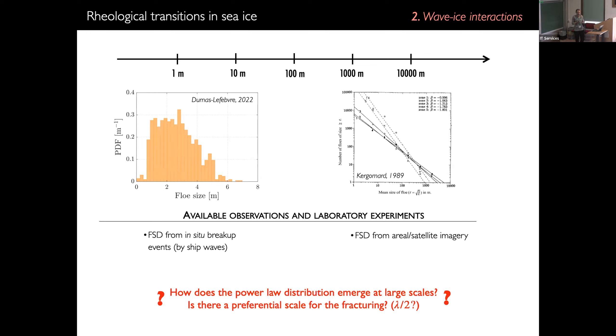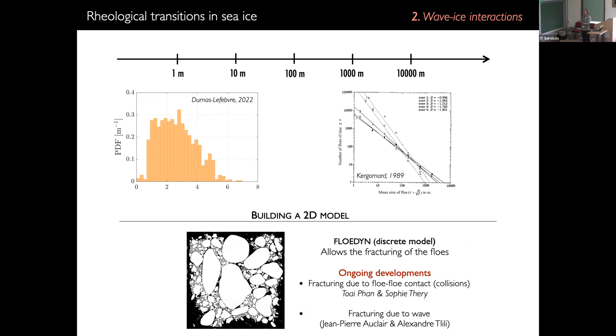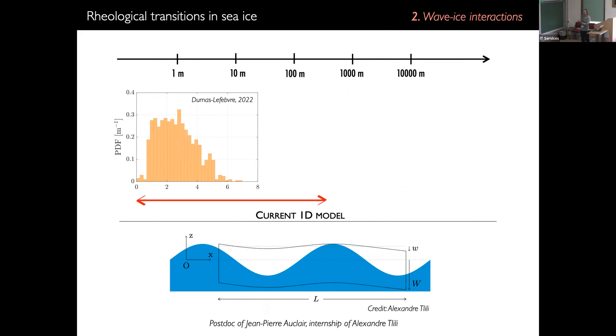Is it because we have many fracturing events that occur? Is it because there is fracturing and then collision and then grinding of the floes? We would want to know that. Also, we would want to know if there's really a preferential scale for the fracturing. Is it the wavelength of the wave divided by two? Is it something else? And so to do that, we would need a large number of wave ice and floe interaction observations, but we don't have that. So we're going to try to fill in the gap again using a model. So the model will be eventually the Flodin 2D model. The developments to allow that are ongoing. So we're including fracturing due to floe-floe contact and fracturing due to waves. But it's not ready yet. So what we're doing right now is rather use a 1D model that allows us to look at single breaking events or that we can use in ensemble runs of breaking events. That is developed by Jean-Pierre Auclair.